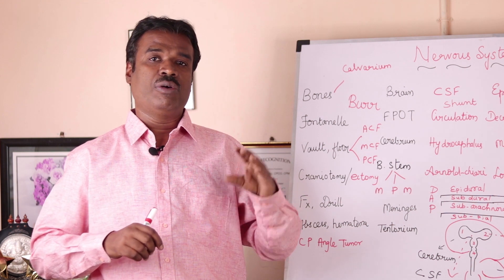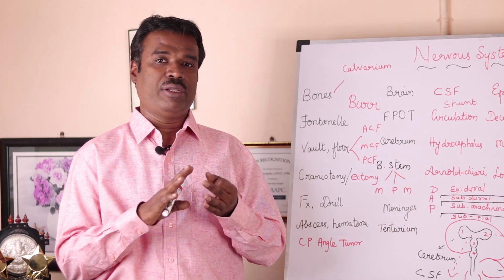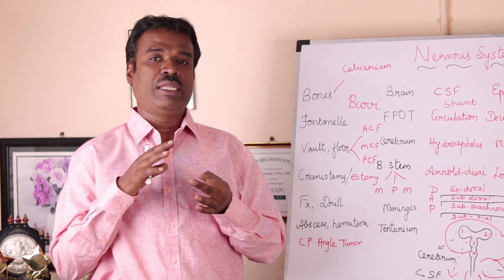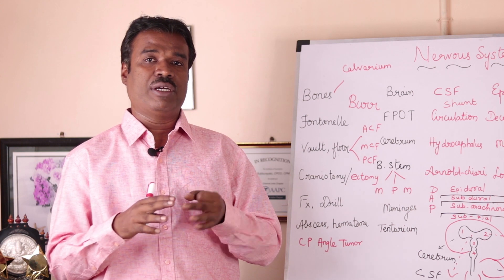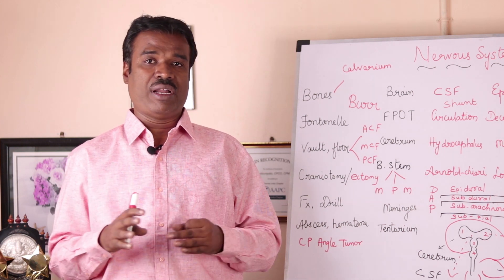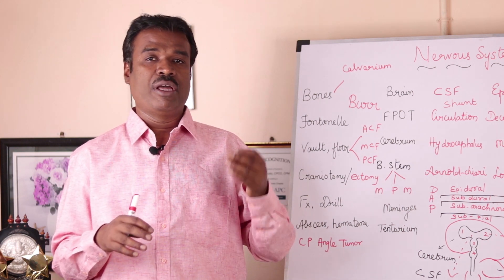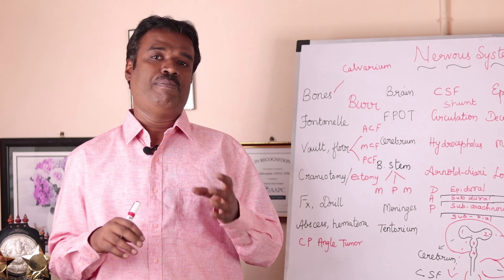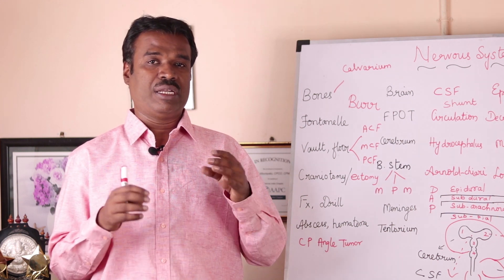Coming back to the meninges, we have the pia, arachnoid, and the dura. The dura membrane, or dura mater, is very thick and hence is called the pachymeninges, whereas the pia and the arachnoid membranes are thin and therefore are called leptomeninges.